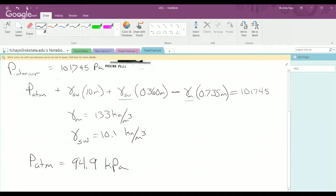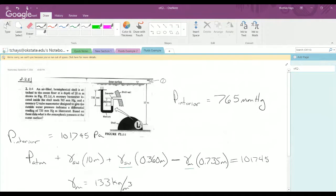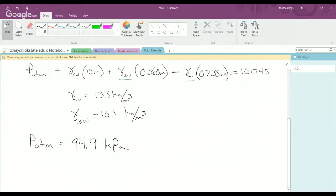you come to find that the variable P atmospheric solves for 94.9 kilopascals. So you are able to regress knowing the ocean is constant density, knowing you have a constant pressure drop as you go up in height.